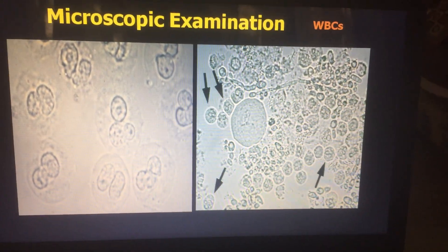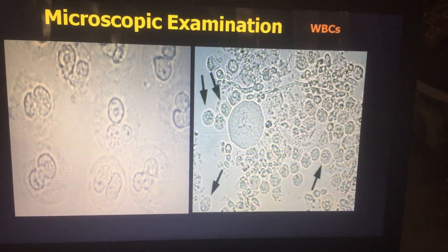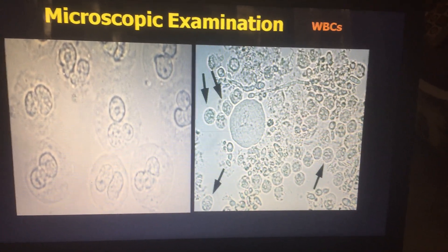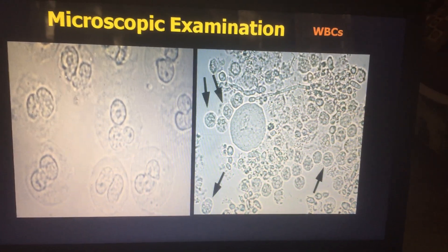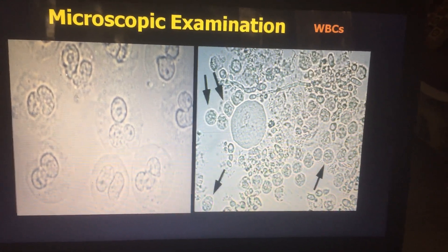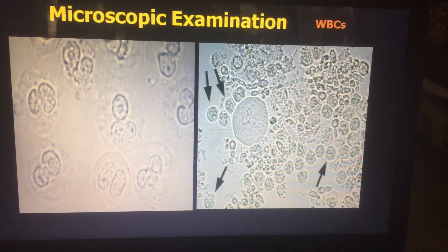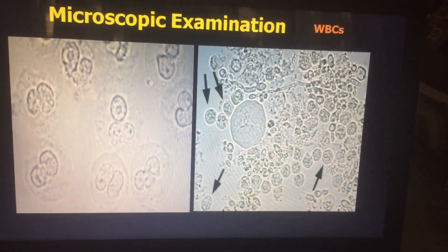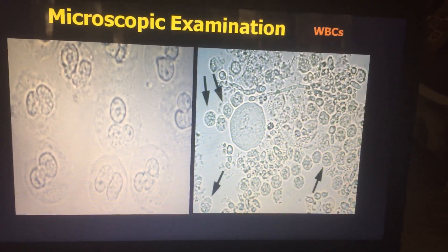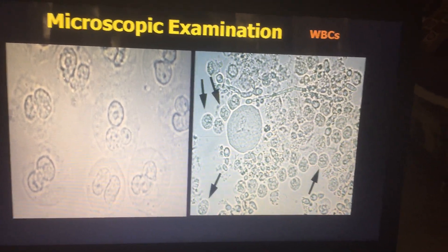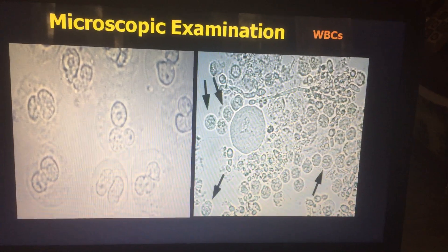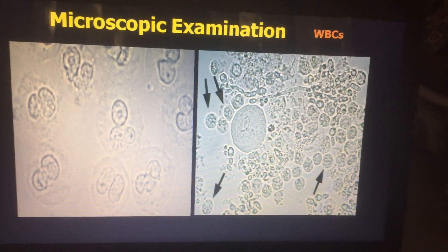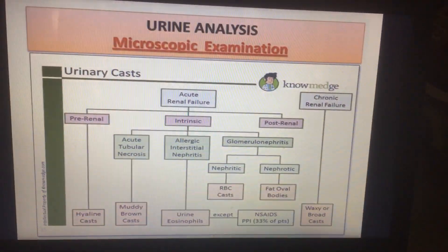This slide shows the presence of WBC — white blood cells — which are called pus cells. This means there is probably evidence of infection, specifically urinary tract infection.